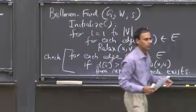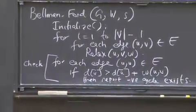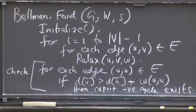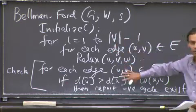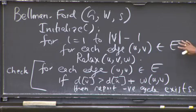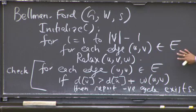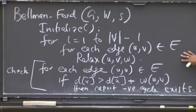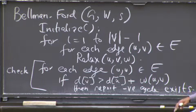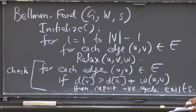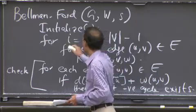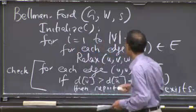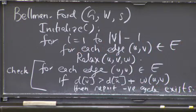That's the algorithm — fits on a board. Any questions about functionality? Someone asks: where is the index i used in the formula? It doesn't appear directly — it's just a counter that ensures you do v minus 1 passes.